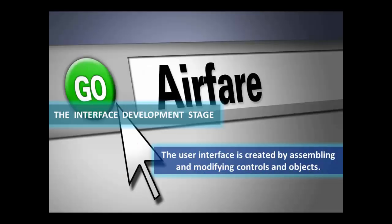Then there's the interface development stage — we're actually building the application, how it looks and feels. We're doing that by assembling objects together, sometimes referred to as controls. So we might have a button that says 'Go' on it; when we click it, it does something. That's the interface.